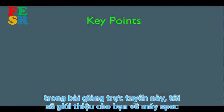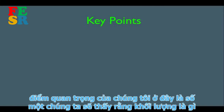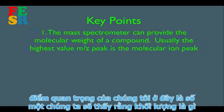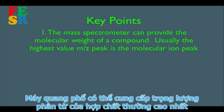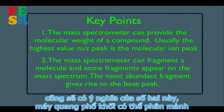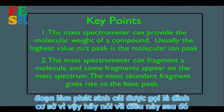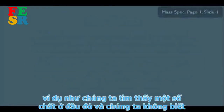In this online lecture I'm going to introduce you to the mass spec machine — how it works and roughly how to read the data. Key point one: the mass spectrometer can provide the molecular weight of a compound; usually the highest value m/z peak is the molecular ion peak. Key point two: the mass spectrometer can fragment a molecule, and some fragments appear on the mass spectrum. The most abundant fragment gives rise to what's called the base peak.